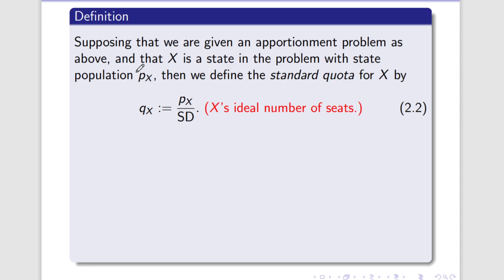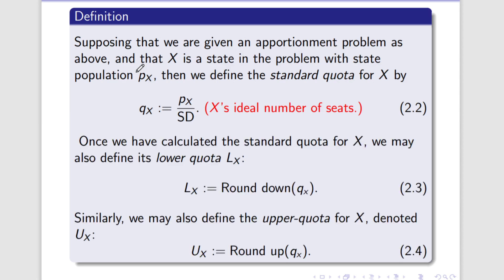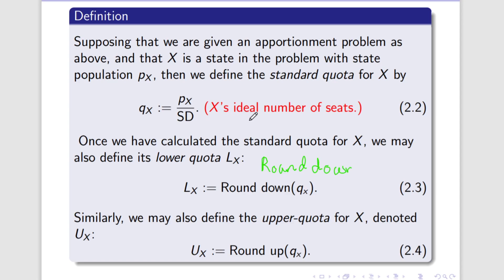Once we have the standard quota, we can define two numbers we will need very frequently: the lower quota LX and the upper quota UX, both for state X. We get them by either rounding the standard quota down for LX or rounding it up for UX. When I say round down, this is not exactly like normal rounding. If I round down 4.5, under normal rules it would go to 5, but because we are rounding down it simply forces the number to the closest whole number below it — which is 4.